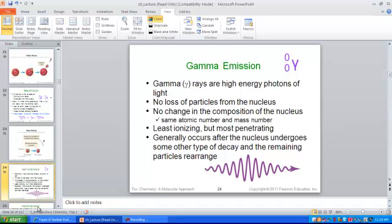So again, no change of identity. Gamma emission is only energy and it takes place after a different type of decay has occurred and it is getting rid of excess energy. So with gamma emission, no change.